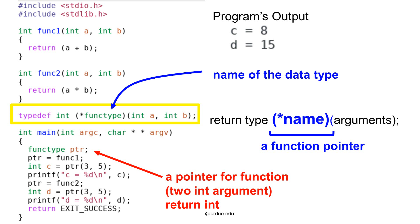Next, ptr points to the second function. The program calls the function using ptr with arguments 3 and 5. The second function returns the product of the two arguments. Thus, the value of d is 15. Please notice that function pointers do not use heap memory — there is no malloc and no free.